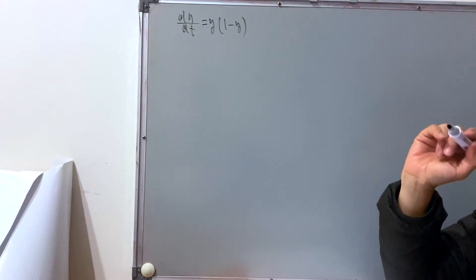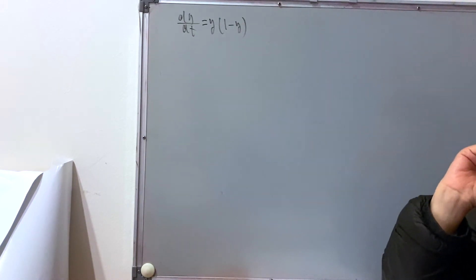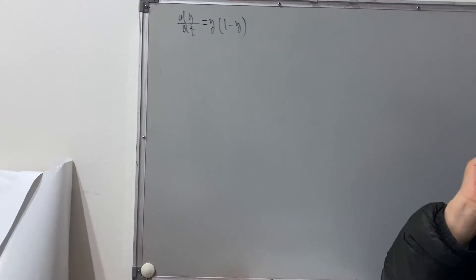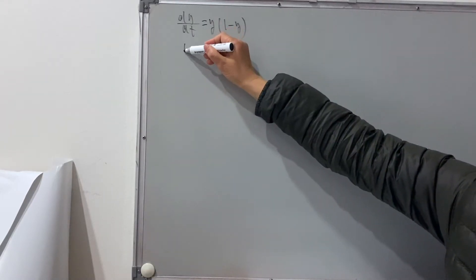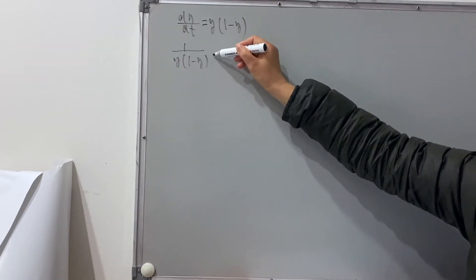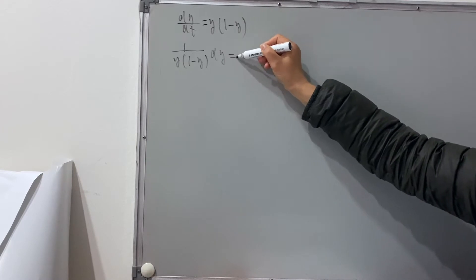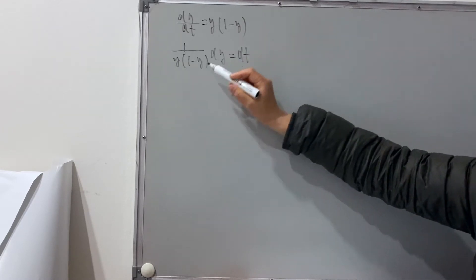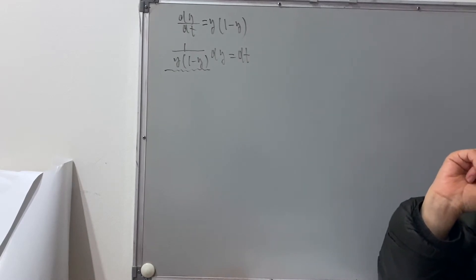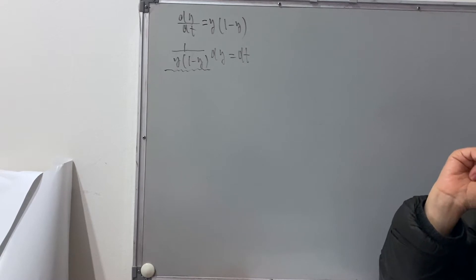If we integrate these questions, we need to separate y and t, then we go into integrating 1 over y times 1 over (1 minus y) equal to dt. But integrating this part is a little bit harder. We needed some algebra technique to do some partial fractions, then we were able to integrate.